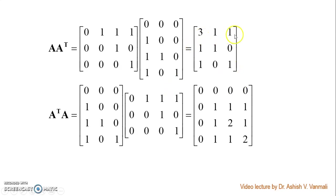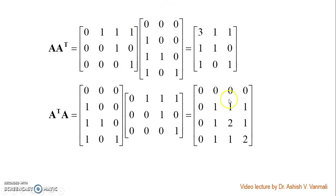Substituting the values, A transpose is the 3×3 matrix with first row [3,1,1], second row [1,1,1], third row [1,0,1]. When you find the eigenvalues and eigenvectors of AA transpose, there will be 3 eigenvalues and 3 corresponding eigenvectors.